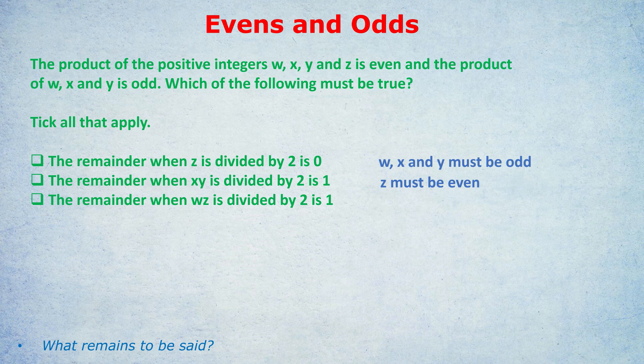Finally, statement three: the remainder when W times Z is divided by two is one — so they're asking whether the product W times Z is odd. But this time the answer is no, because we know Z is even, and an even times an odd will be even. So this would not be a correct answer.